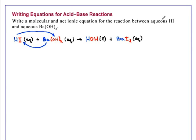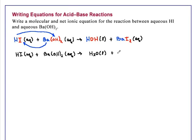So we now need to balance the equation. So we'll rewrite this: HI aqueous plus Ba(OH)2 aqueous reacts to form, we'll go ahead and write the water as H2O now, liquid plus BaI2 aqueous.